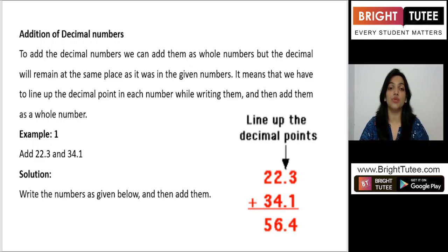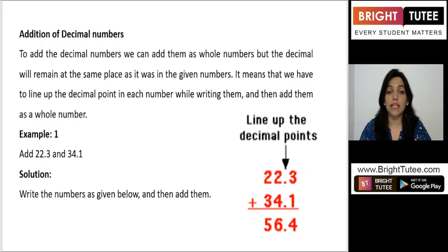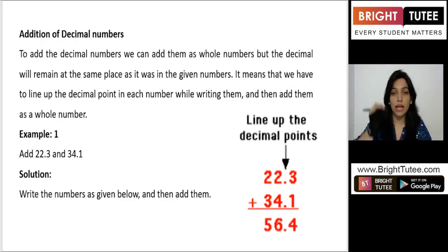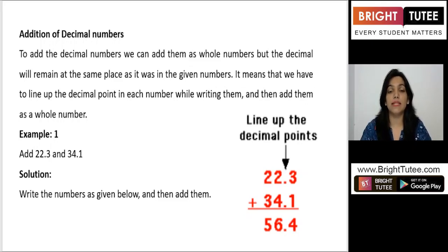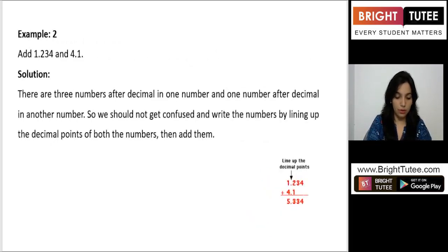Let us begin with the first example, which shows how to add decimal numbers. The numbers are 22.3 and 34.1. We write the numbers one below the other, making sure the decimal points are lined up — the whole number parts together, the decimal points aligned, and the tenths place digits aligned. Adding these two numbers gives us 56.4.